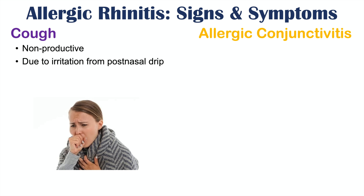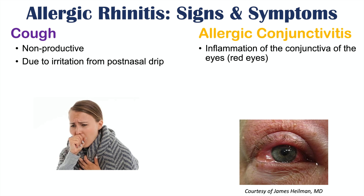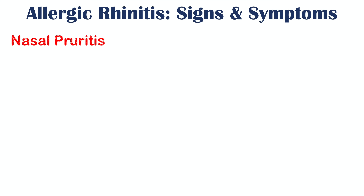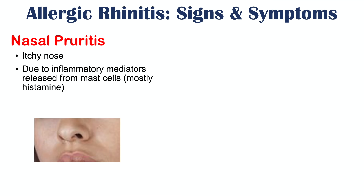We can also see allergic conjunctivitis with allergic rhinitis — inflammation of the conjunctiva of the eyes, presenting as red eyes. The conjunctiva become irritated from the allergens through similar mechanisms, with histamine and other inflammatory mediators causing vasodilation in the conjunctiva, leading to watering or tearing of the eyes. We can also see nasal pruritus, meaning an itchy nose, again due to histamine causing itching.